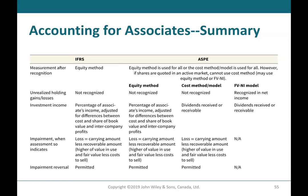Impairment is assessed when indicators so indicate. Under the equity method, the loss equals the carrying amount less the recoverable amount (the higher of value in use and fair value less cost to sell). The same applies under the cost method. Impairment is not applicable under the fair value through net income model. Impairment reversals are permitted under the equity method and cost method, and not applicable under the fair value through net income model.